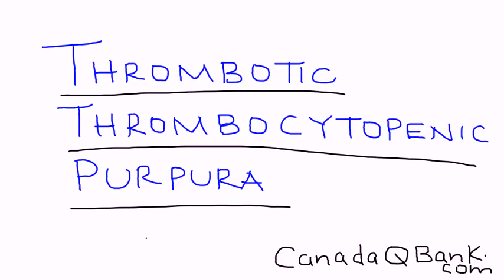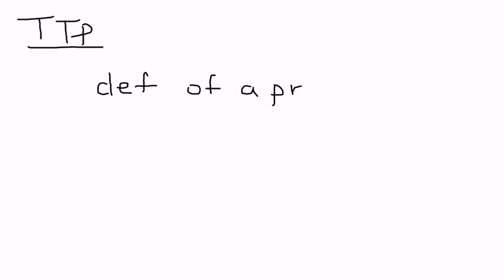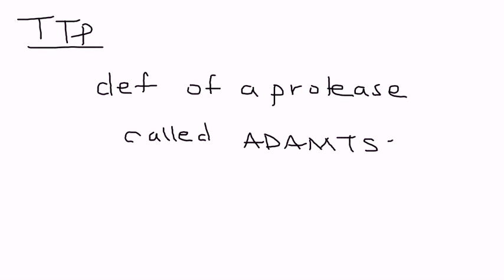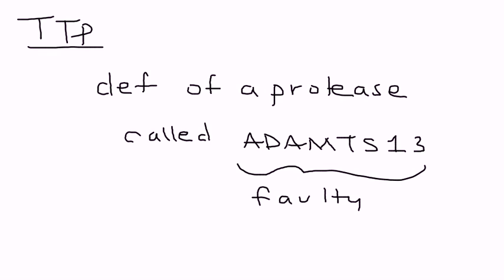Thrombotic thrombocytopenic purpura, or TTP, is the topic for this video. TTP is a very interesting medical condition, and it results from the deficiency of an enzyme. It's either inherited or acquired, and that protease enzyme is known as ADAMTS13. Essentially, this is an enzyme, and it's faulty in TTP.